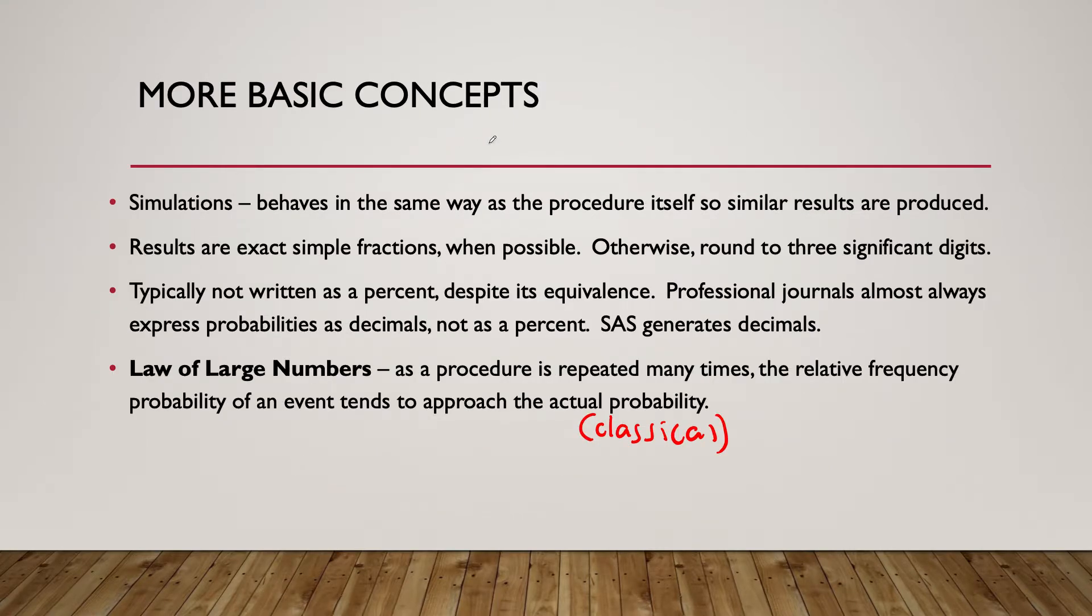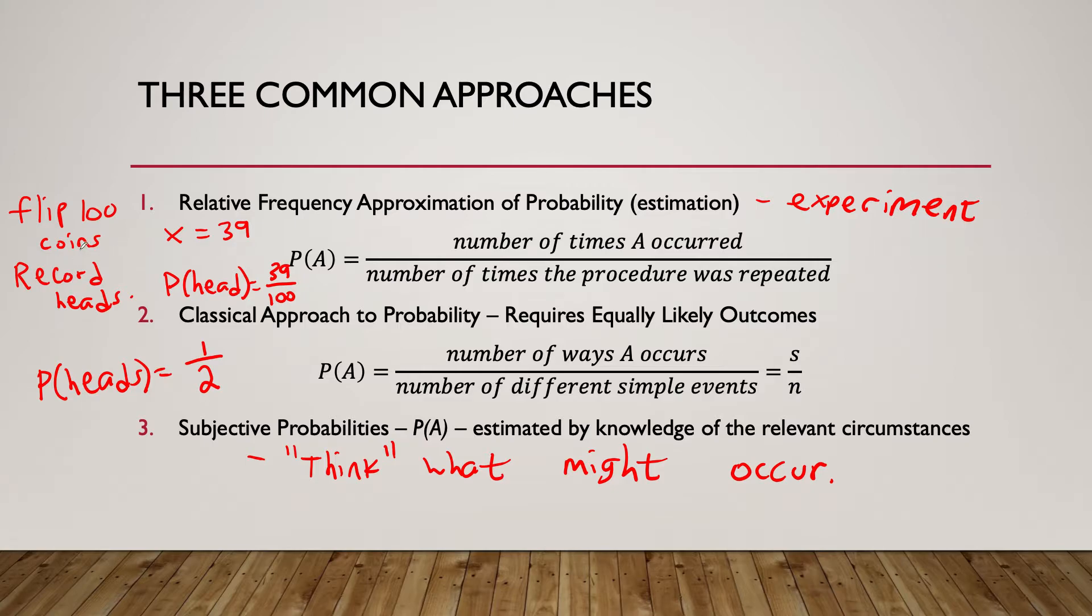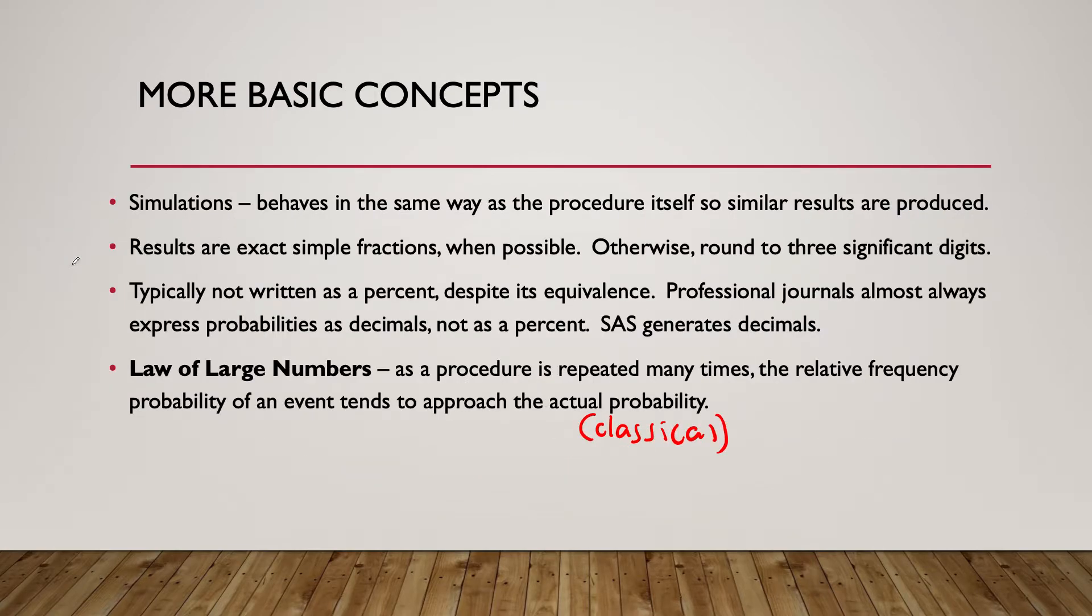A simulation is where the event behaves in the same way as the procedure itself, so similar results are produced. For example, flipping a coin 100 times. We could simply sit down and flip a coin 100 times, but who wants to sit there for 100 coin flips? We could simulate coin flips using a computer. We don't even have to use a random number generator. The computer will automatically flip a coin for us and we can record the number of heads or tails.